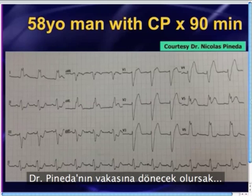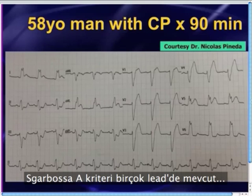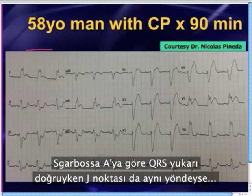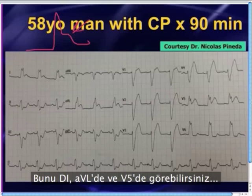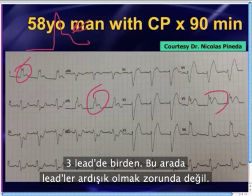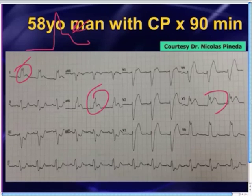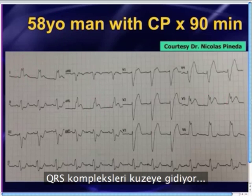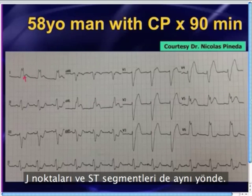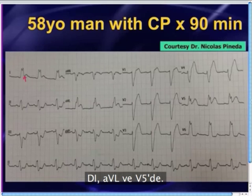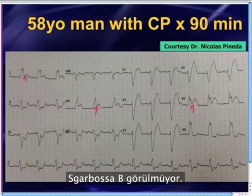Let's go back to Dr. Pineda's case — 58-year-old man with chest pain. Sgarbossa criteria A is present in a handful of leads. Recall that criteria A says if the QRS goes up and the J point and ST are in the same direction. You see this in lead 1, in lead AVL, and in lead V5 — three leads. By the way, they do not need to be contiguous; this works even if you see it in one isolated lead. QRS complexes are going north and the J point and ST segment are concordant in lead 1, AVL, and V5. This person is having an MI.